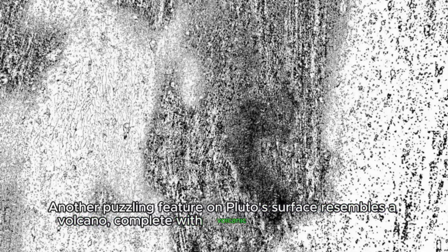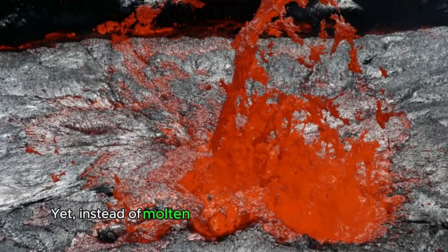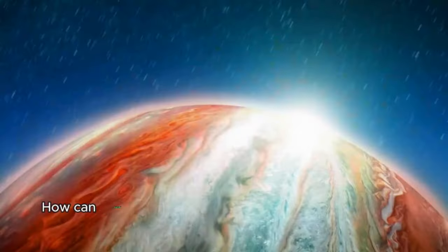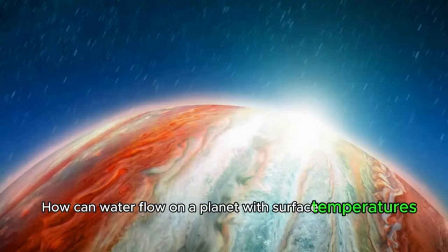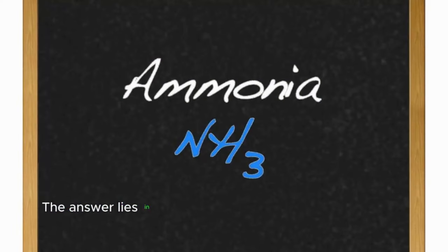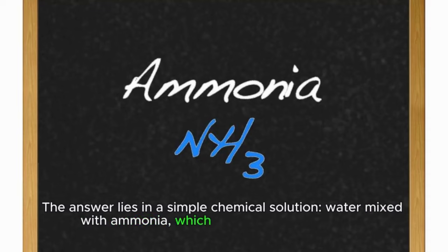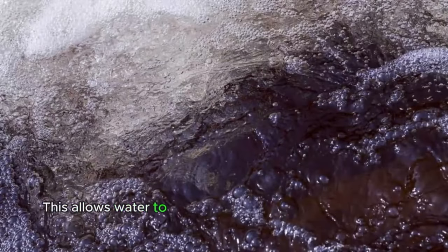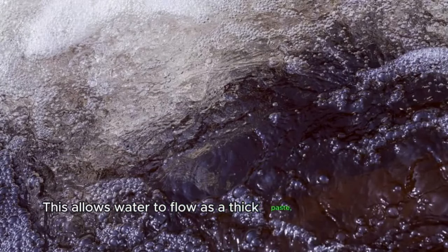Another puzzling feature on Pluto's surface resembles a volcano, complete with volcanic activity-like textures. Yet, instead of molten lava, this volcano ejects water. How can water flow on a planet with surface temperatures as low as minus 400 degrees Fahrenheit? The answer lies in a simple chemical solution: water mixed with ammonia, which lowers its freezing point. This allows water to flow as a thick paste, resembling lava under Pluto's frigid conditions.